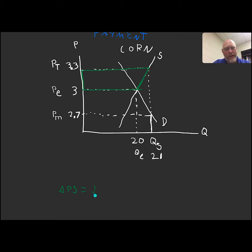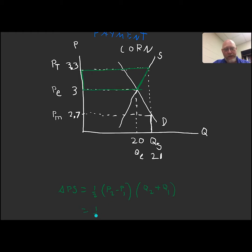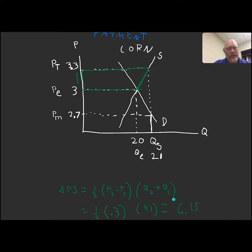The formula is: delta PS = one half times (P2 minus P1) times (Q1 plus Q2), where P1 is the equilibrium price, P2 is the target price, Q1 is the equilibrium quantity, and Q2 is the quantity supplied. That equals one half times $0.30 times (20 + 21) = one half times 0.3 times 41, giving us $6.15 billion — the exact same number as the previous video, because we used the same supply curve and did the same thing to the price. So producers gain $6.15 billion.